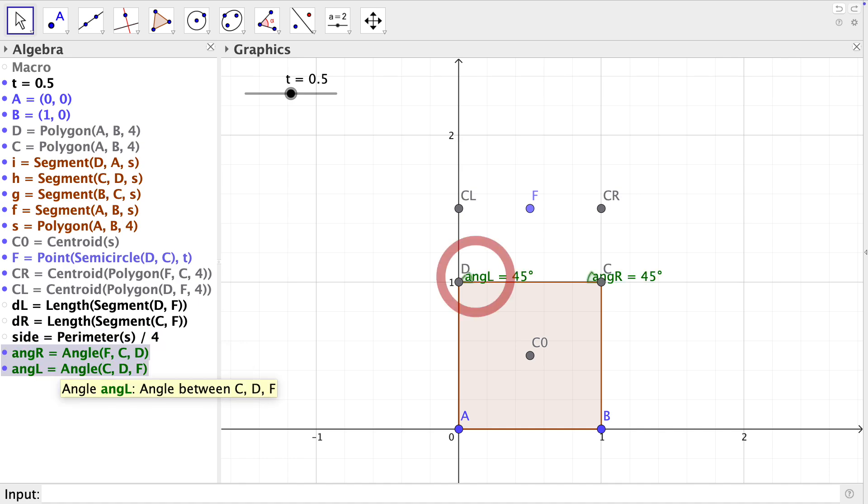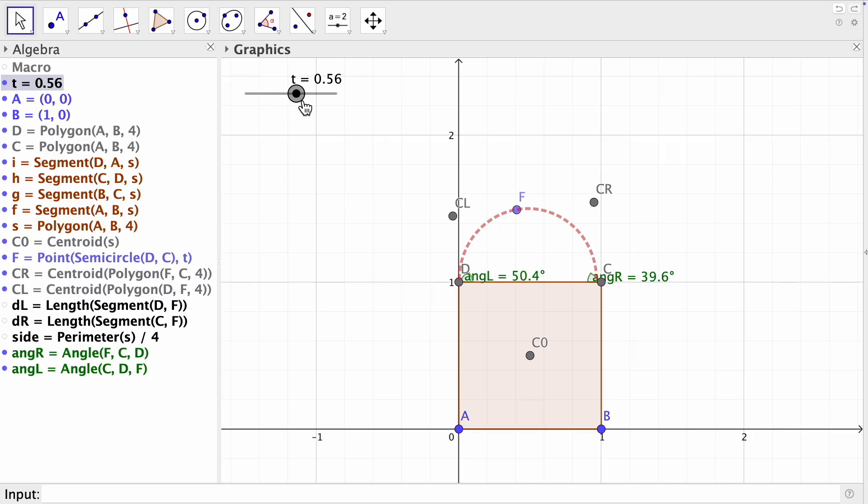We also need the angle defined by the points D, C and F on the left side and the angle on the right side defined by the points D, C and F. These angles change when I change the position of the point F with the slider.